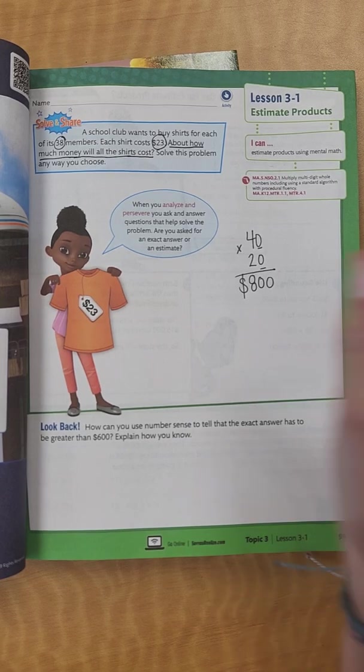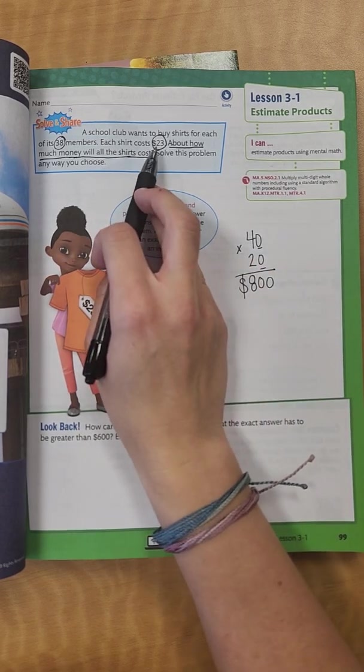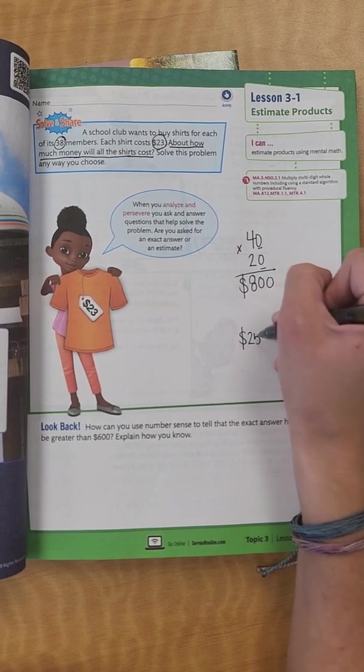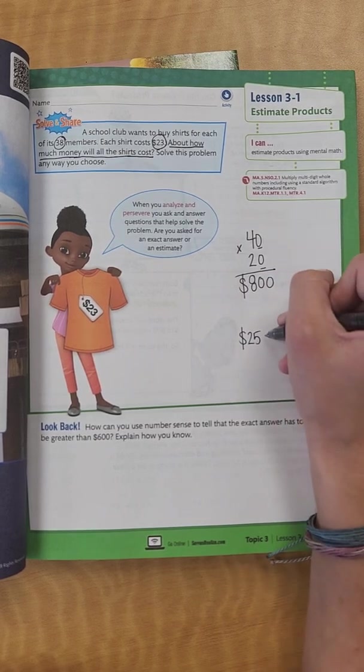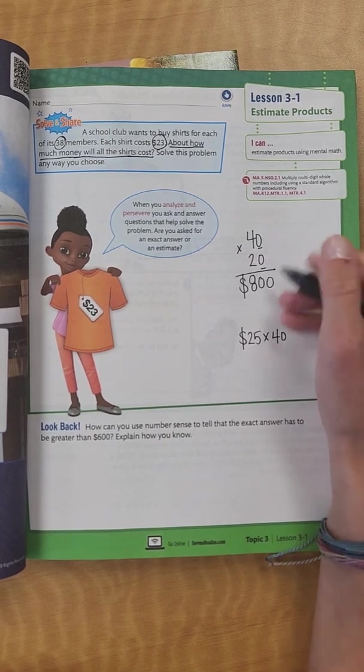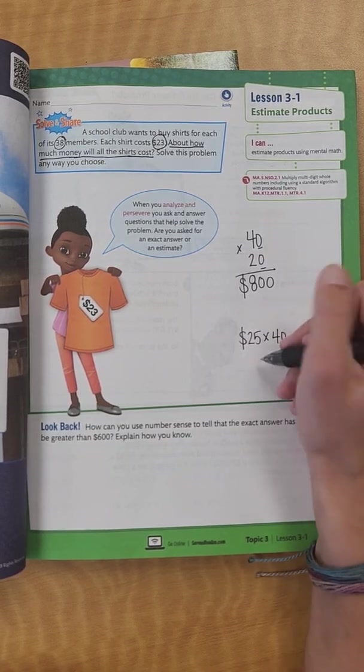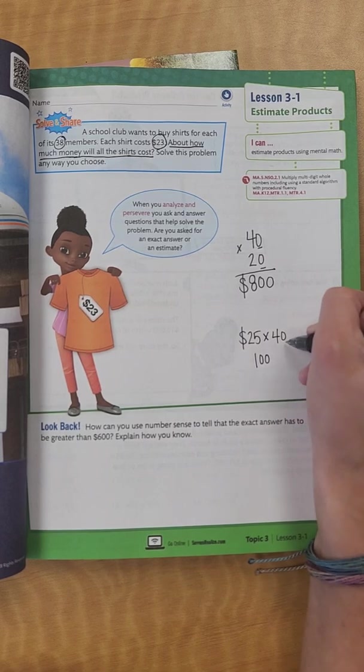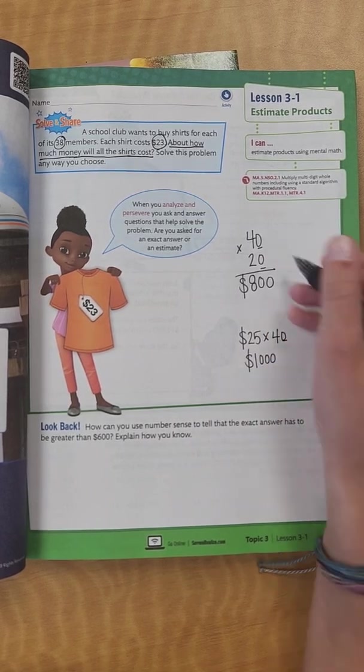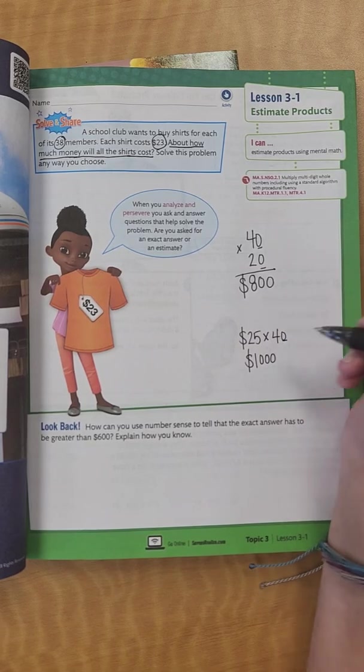Okay, another thing that you could do is you could round this up to about 25. So each shirt costs about $25, and there's about 40 members, so we would multiply that by 40 members. I know that 25 times 4 is 100, and then I would add my 0 at the end, so it would cost about $1,000. Both of those ways would work. Let's go to the next page.